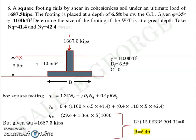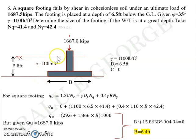Solving the cubic expression gives a value of B equal to 6.4 feet. In short, when you have a square footing of 6.4 feet in length and breadth, laid at 6.5 feet below the ground level, you can safely carry a load of 1687.5 kips under these conditions.